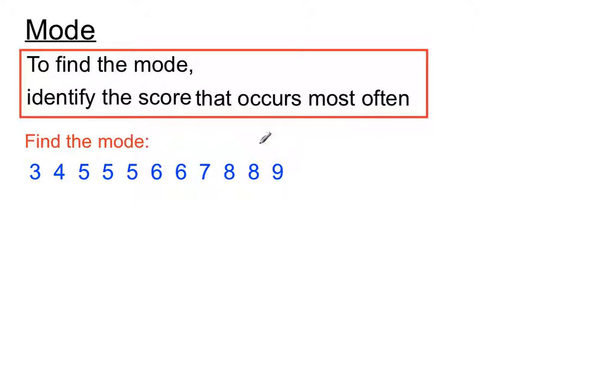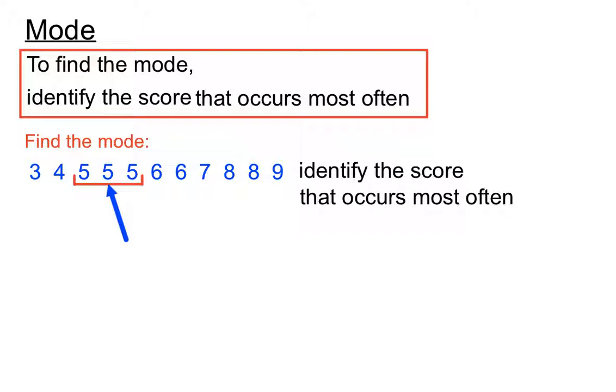Now you can see that a couple of these scores occur a couple of times. There's two eights, there's two sixes, but you can see that five occurs three times. So we identify the score that occurs the most and that's the five. So the mode there is five. It's the score that occurs most often.